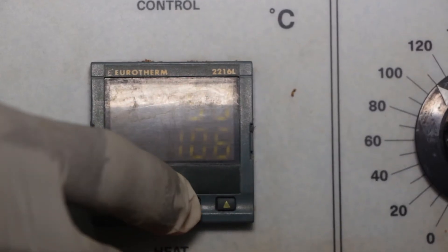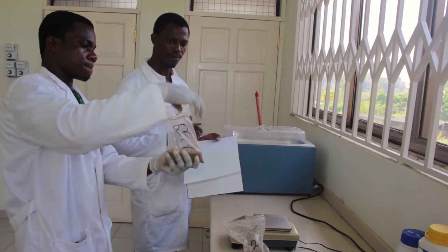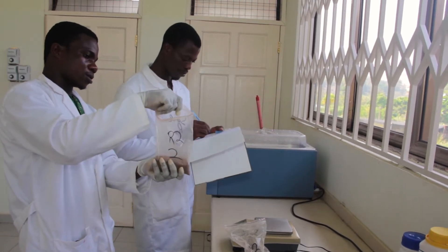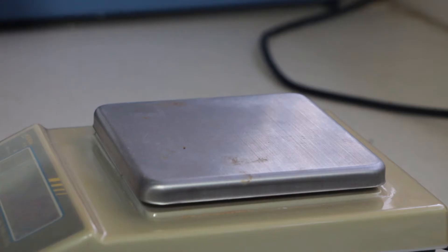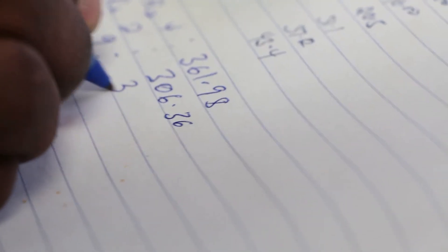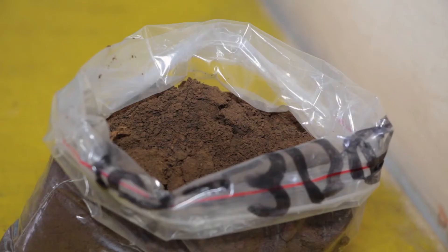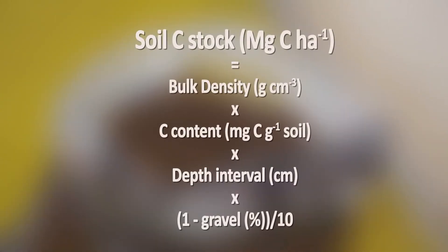Bulk density is expressed in grams per cubic centimeter. Soil samples for bulk density are dried in an oven at 105 degrees Celsius and then weighed. Gravel and root content greater than two millimeters in diameter will be weighed separately. After carbon content and bulk density are recorded, soil carbon stock can be calculated using the following formula: soil carbon stock is calculated by multiplying soil bulk density by the concentration of organic carbon in the soil by the soil depth interval by the calculation of 1 minus the fractional gravel content, divided by 10.